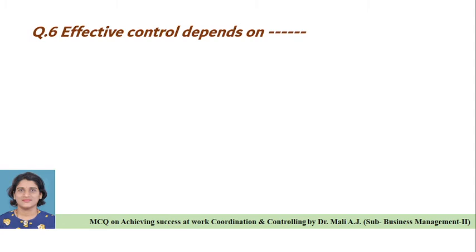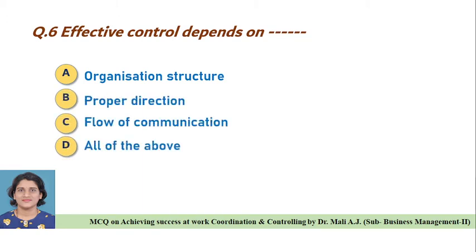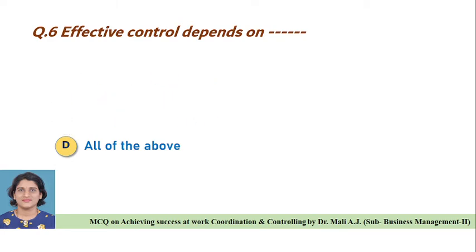Question six: Effective control depends on — Option A: organization structure, Option B: proper direction, Option C: flow of communication, Option D: all of the above. Correct answer is Option D, all of the above.